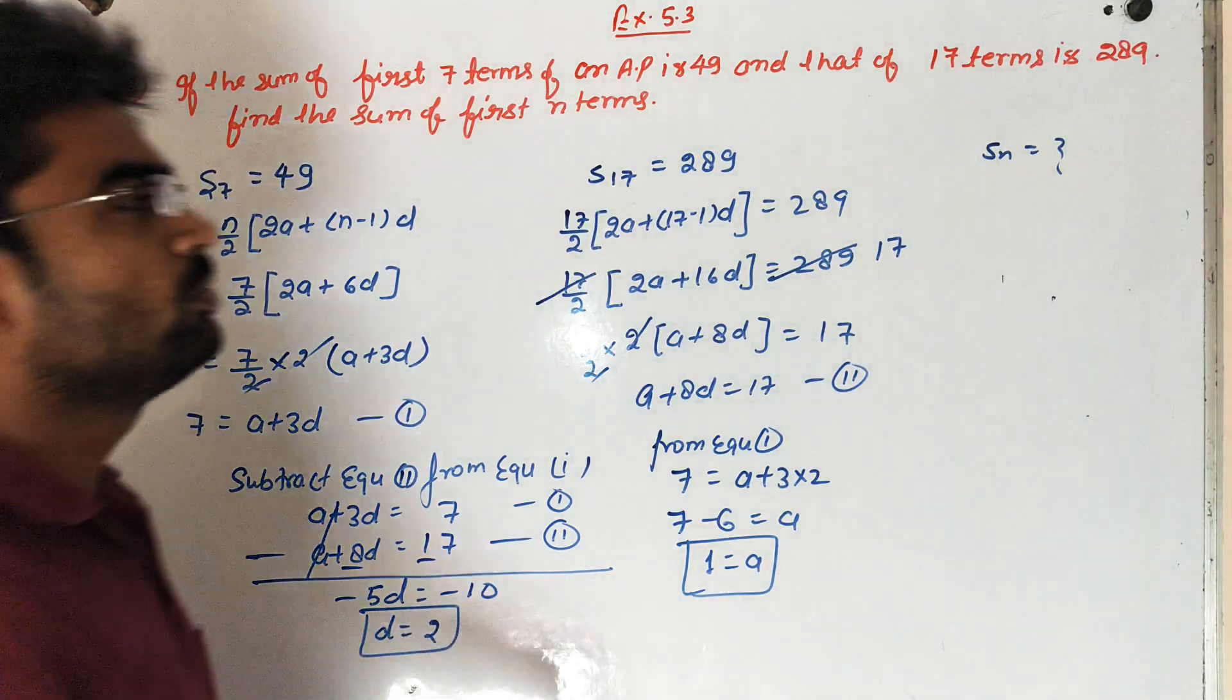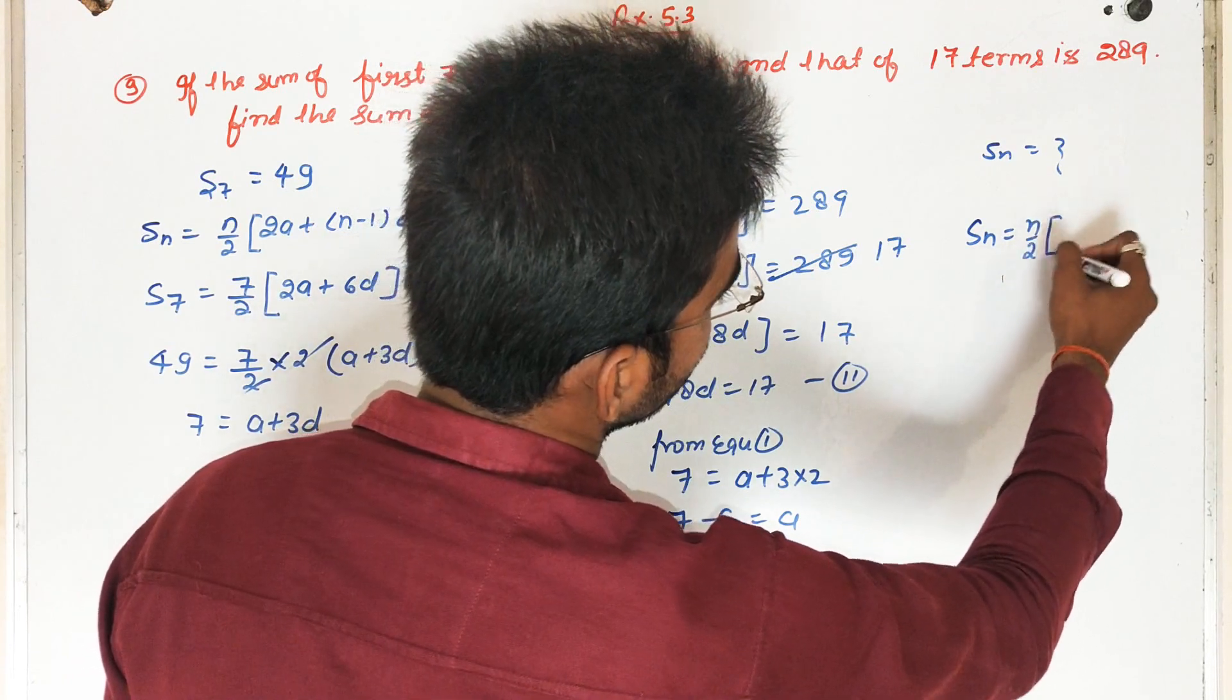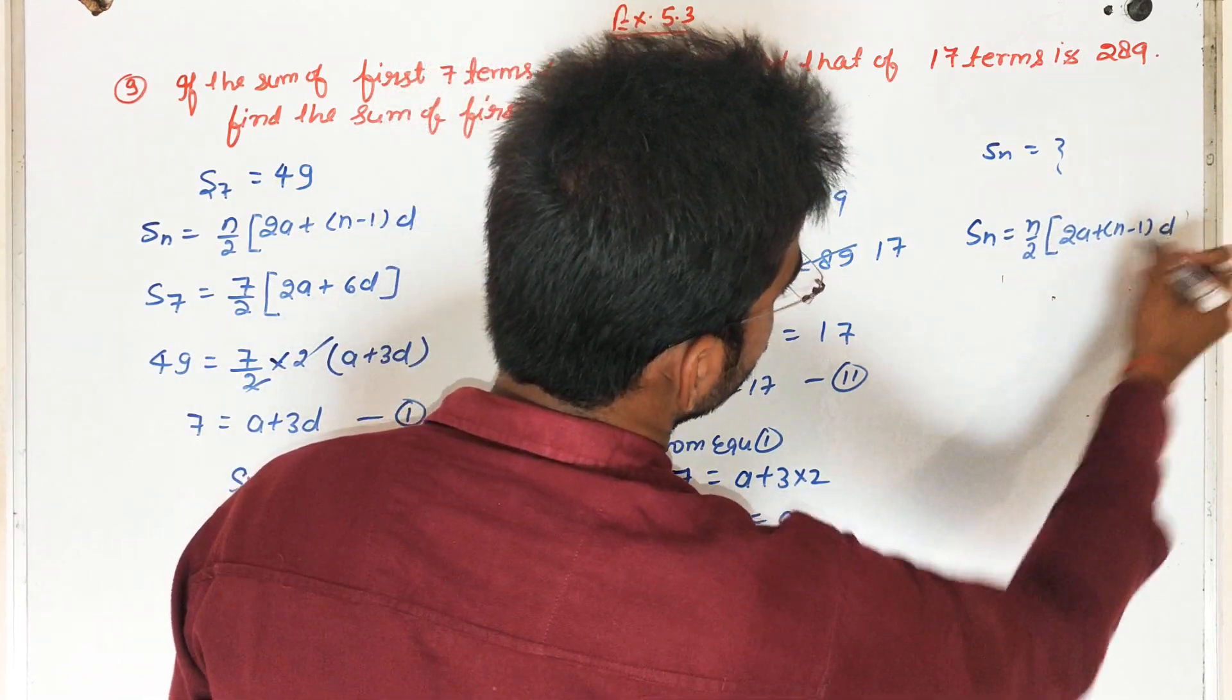Now we have to find the sum of Nth term. Sum of Nth term is N upon 2, 2A plus N minus 1 into D.